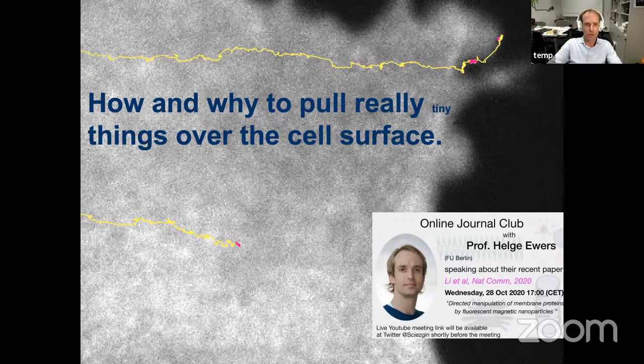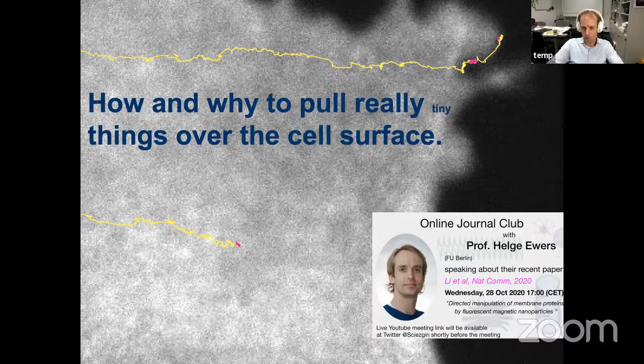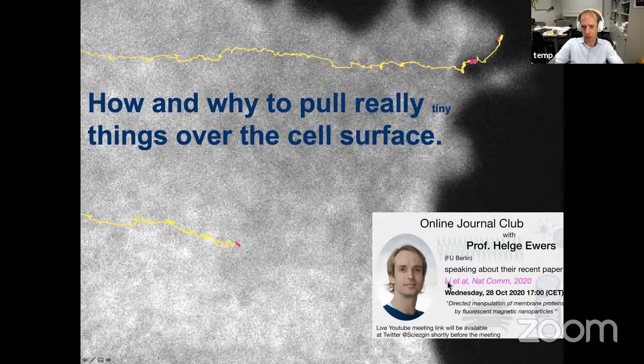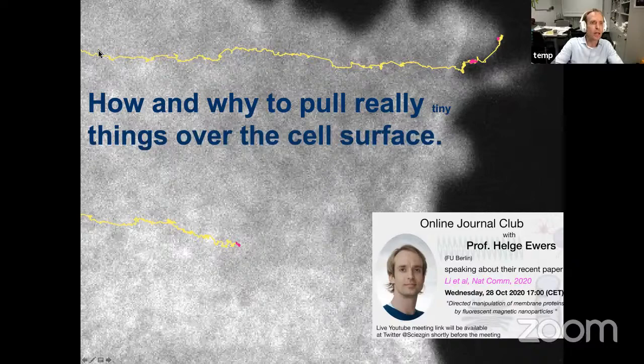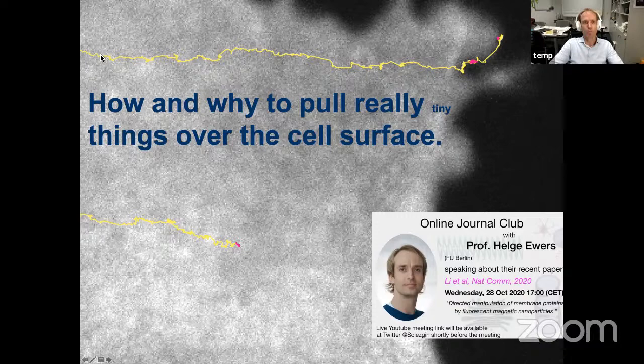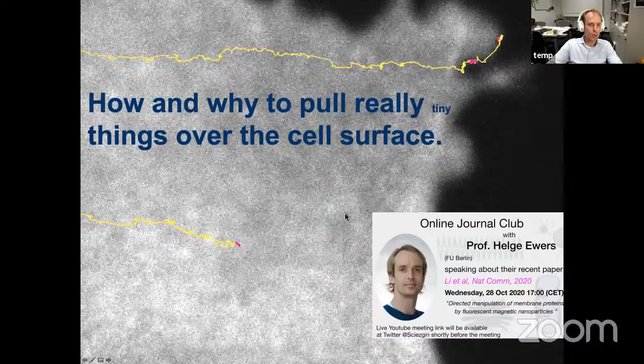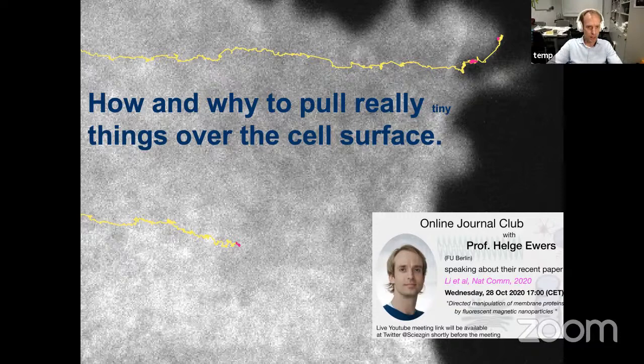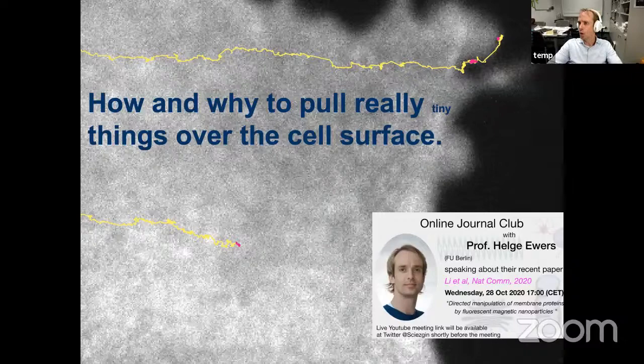My name is Helge Ebers. I'm a professor for membrane biochemistry at the Free University in Berlin. We are very much interested in membrane compartmentalization, something we share with our host. We have been selected for today's journal club for a recent paper from a finishing grad student from the lab, Jia Hui Li, that was published earlier this year. What she did was use tiny magnetic fluorescent particles and pulled them using magnets over the cell surface. I would like to share with you now why we did this and what we think we may be able to do with it, and maybe this would be interesting for you or your work.